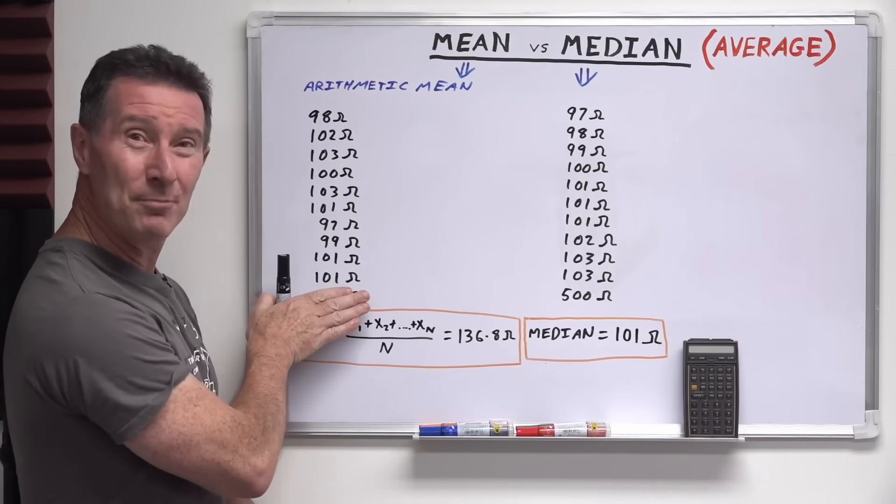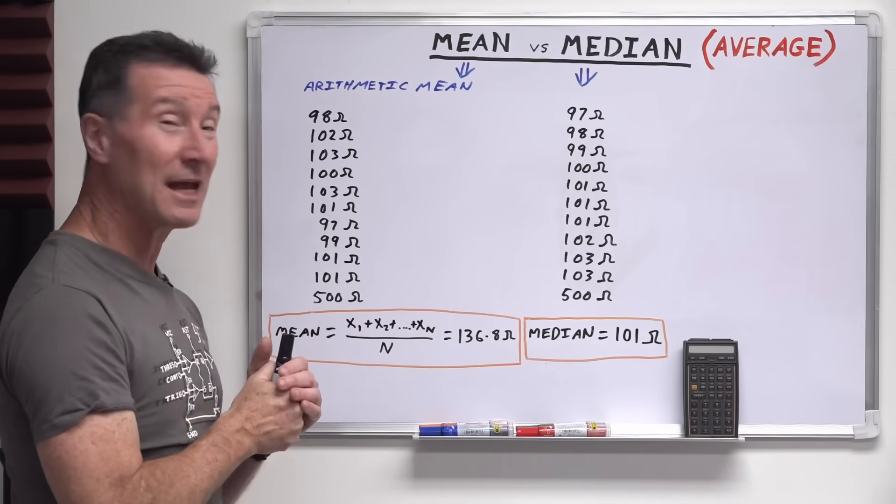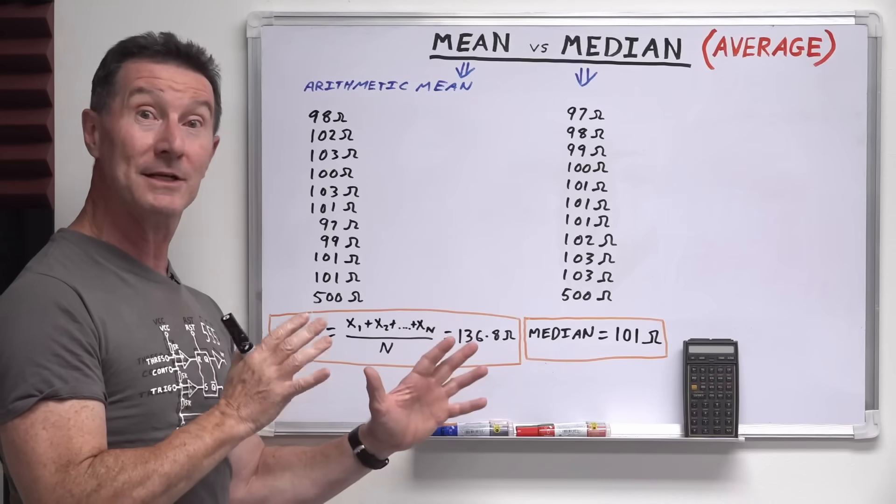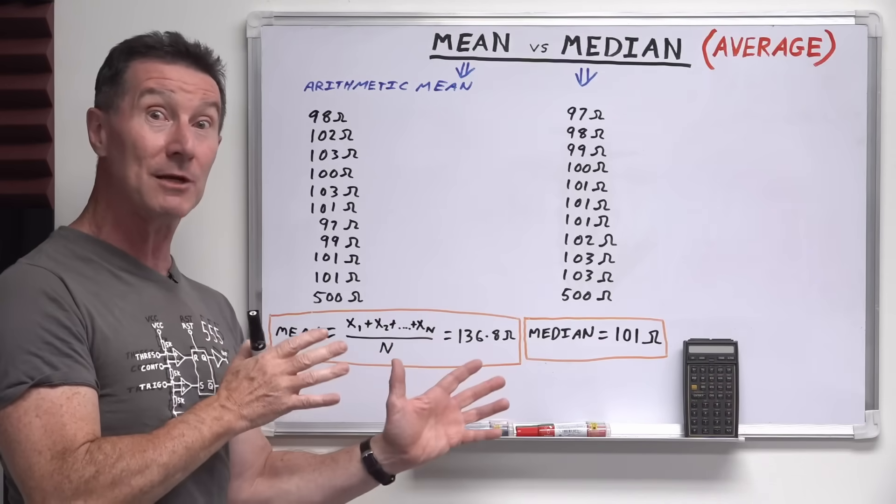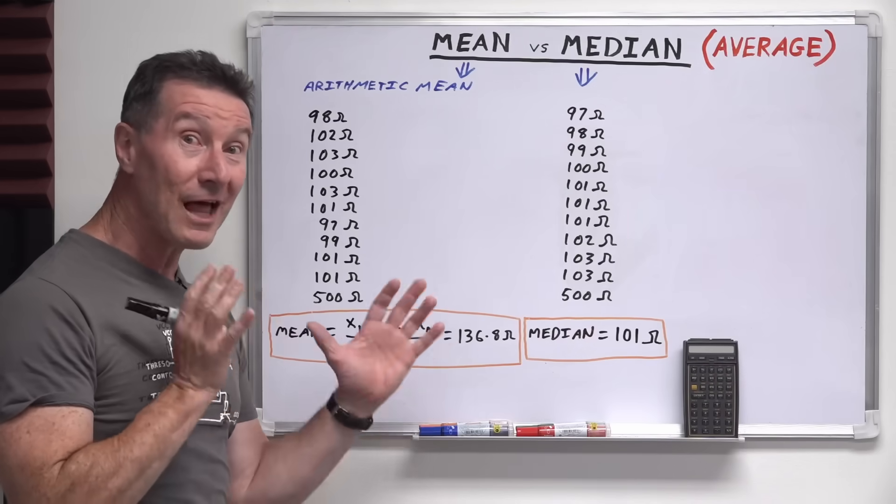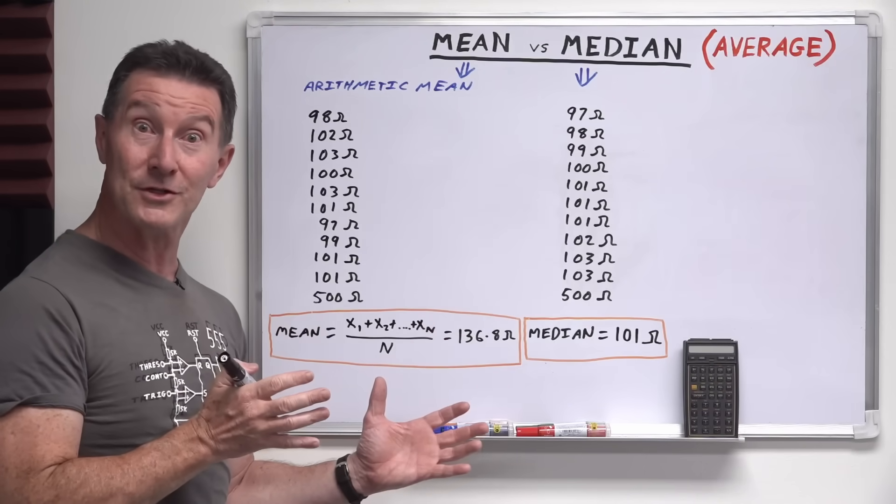So of course you could just throw away that data point and not include it in your data set, but sometimes you want to leave that data there because it might be legitimate data. Let me give you another example.